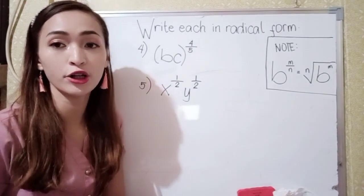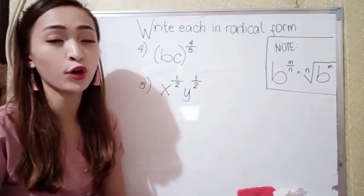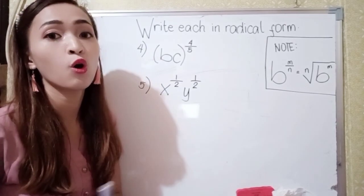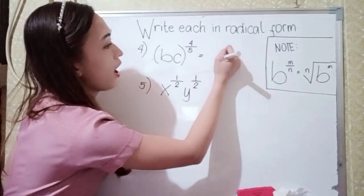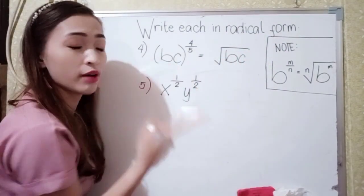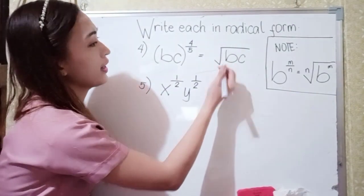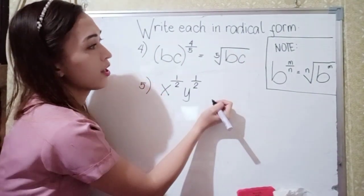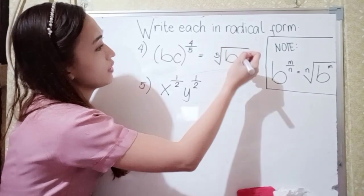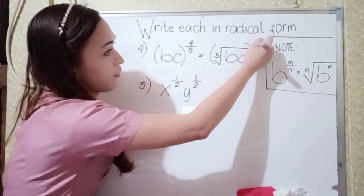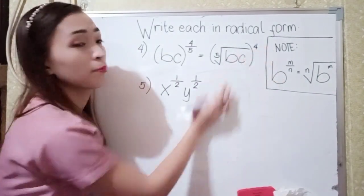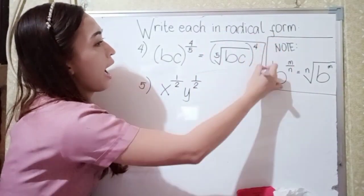For number 4, we have (bc) raised to 4 over 5. Here we have a grouping symbol, so bc altogether is raised to 4 over 5. Our radicand will be bc, our index is the denominator 5, and our numerator 4 becomes the power. Since bc is raised to the 4th power, this is our answer for number 4.